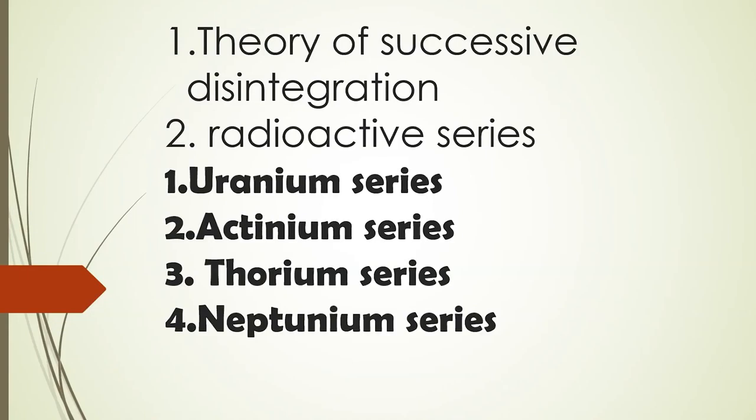Hello everyone. In the last video we discussed about the theory of successive disintegration and the radioactivity series. In the theory of successive disintegration, we learned that radioactivity is a nuclear phenomenon in which all naturally occurring radioactive nuclides are disintegrated successively to another nucleus to form a stable end product in a chain decay.